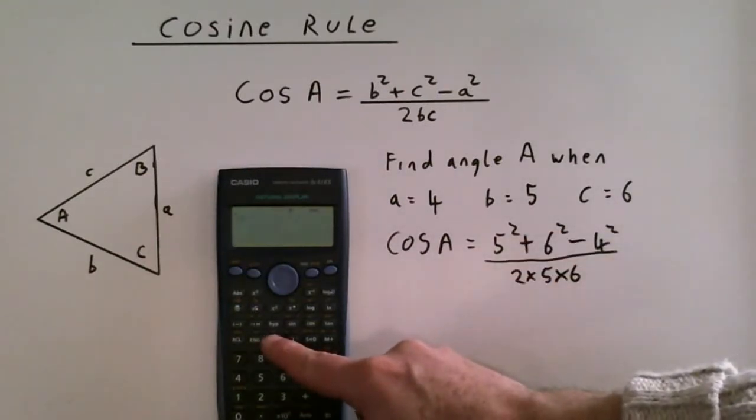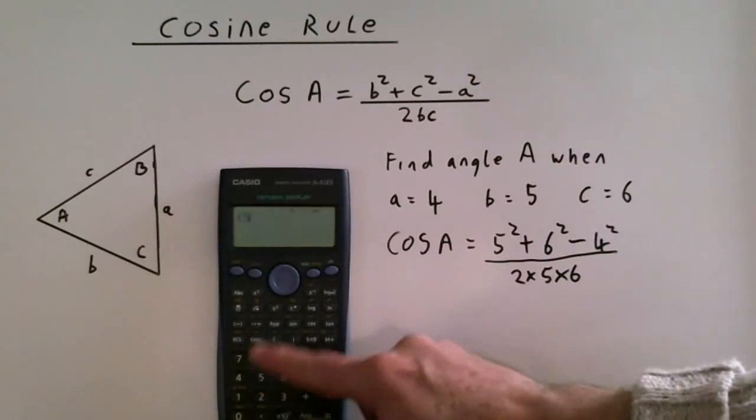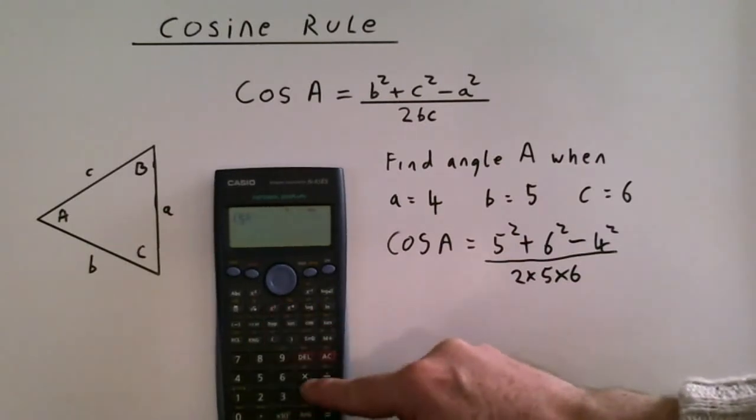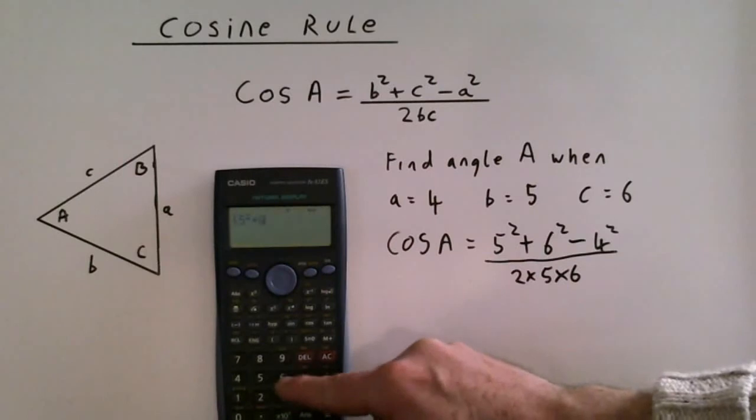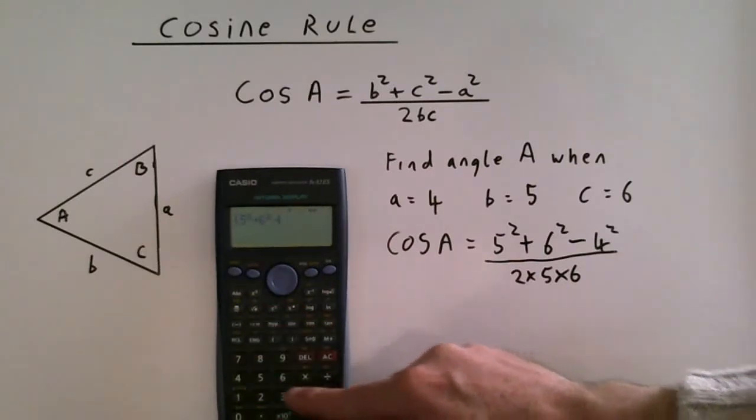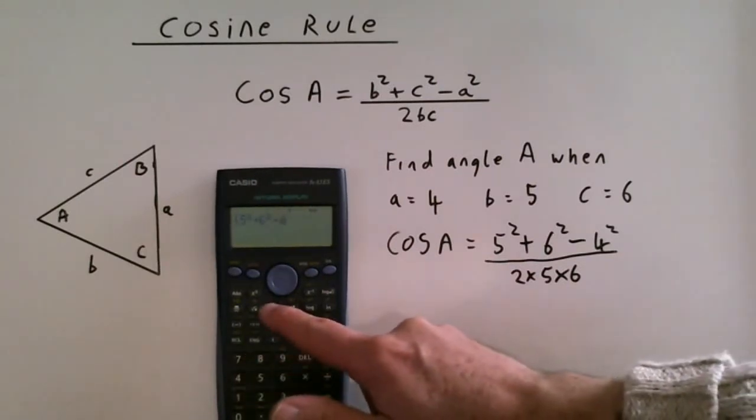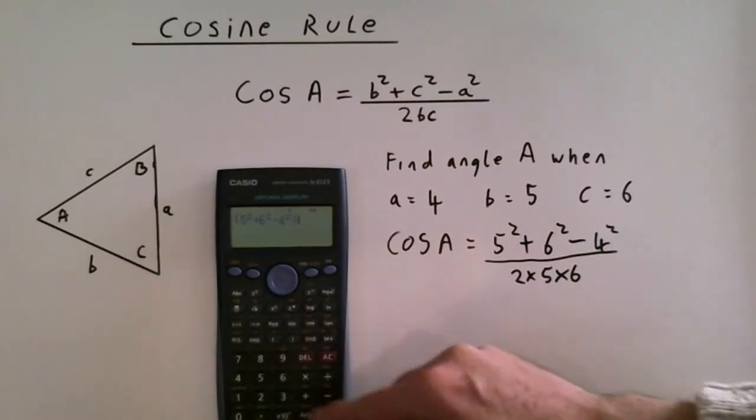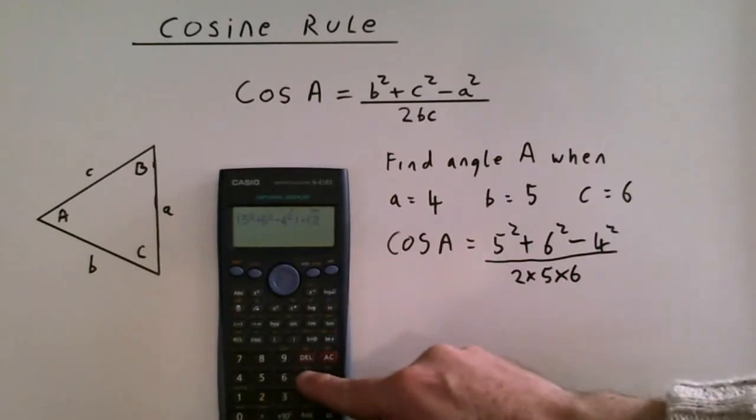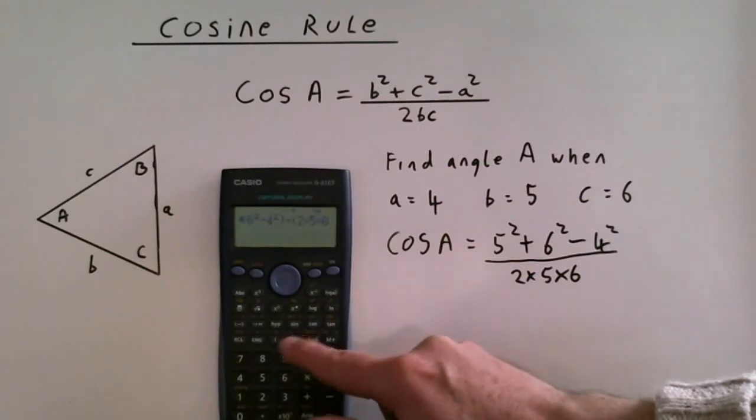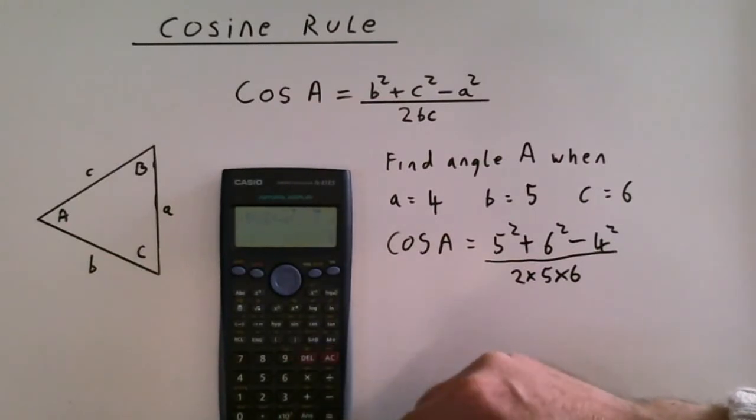Open a bracket. 5 squared plus 6 squared minus 4 squared. Close the bracket. Then divide. Open the bracket. 2 times 5 times 6. Close the bracket. And that equals 3 quarters.